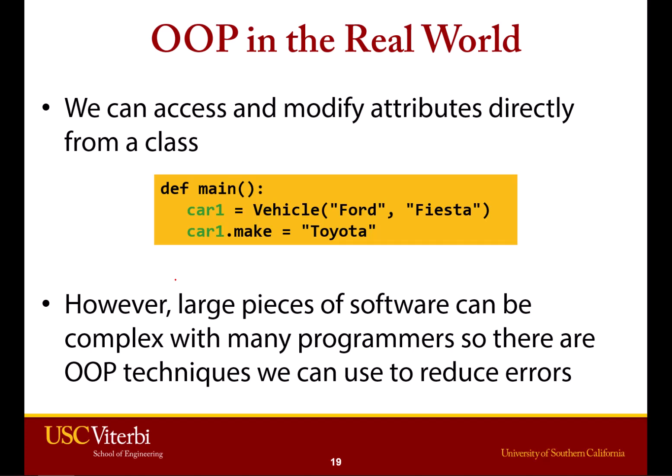We've seen that we can access and modify attributes directly from a class. As you can see here, we can say car.make equals Toyota. Very easily we can change the make of the class. However, when we're working in really large pieces of software with lots of programmers, this technique can cause a lot of problems.